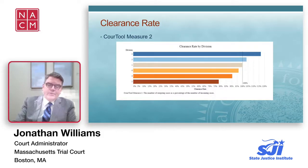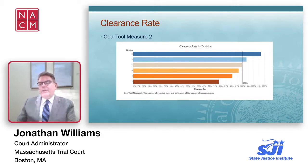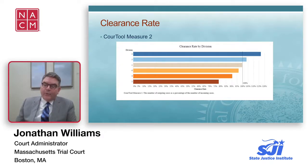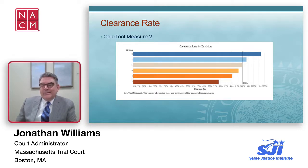Let's take a simple example from the court tools framework: clearance rate. Clearance rate is a great and simple metric — it's cases disposed divided by the number of cases filed during a period of time. This example on screen shows clearance rates for a court divided into six divisions, ranked in order from highest clearance rate to lowest. You can see that the third division down rests at right about 100%, meaning the same number of new cases were filed as were disposed during this period.